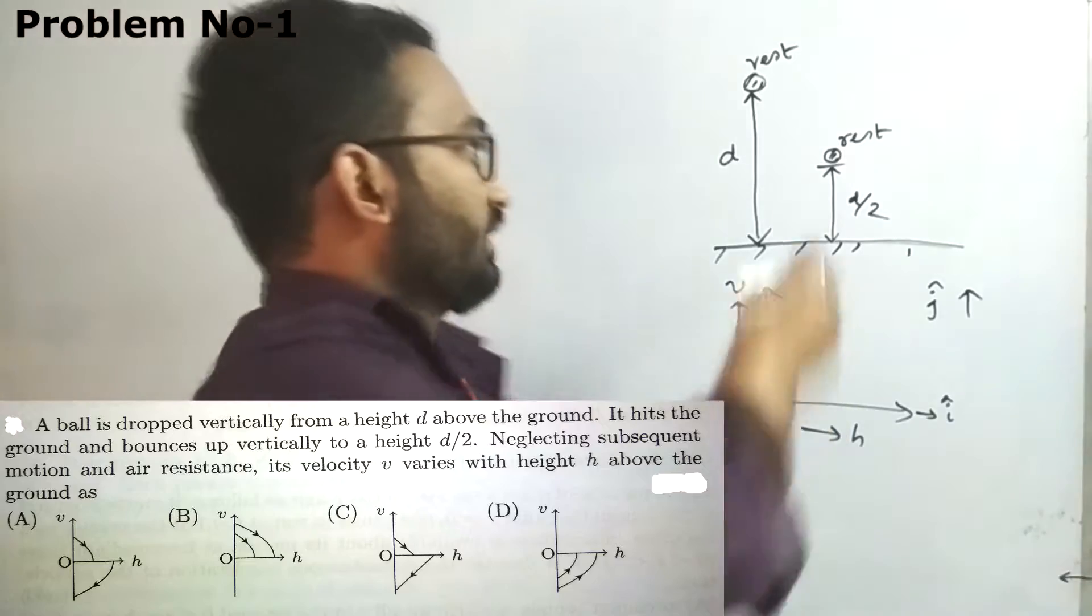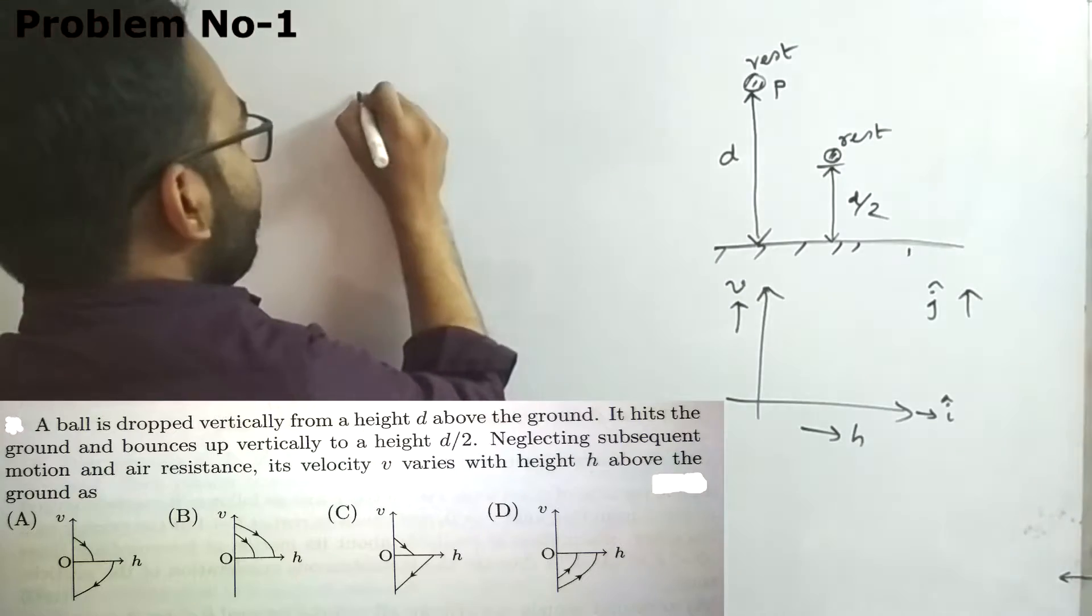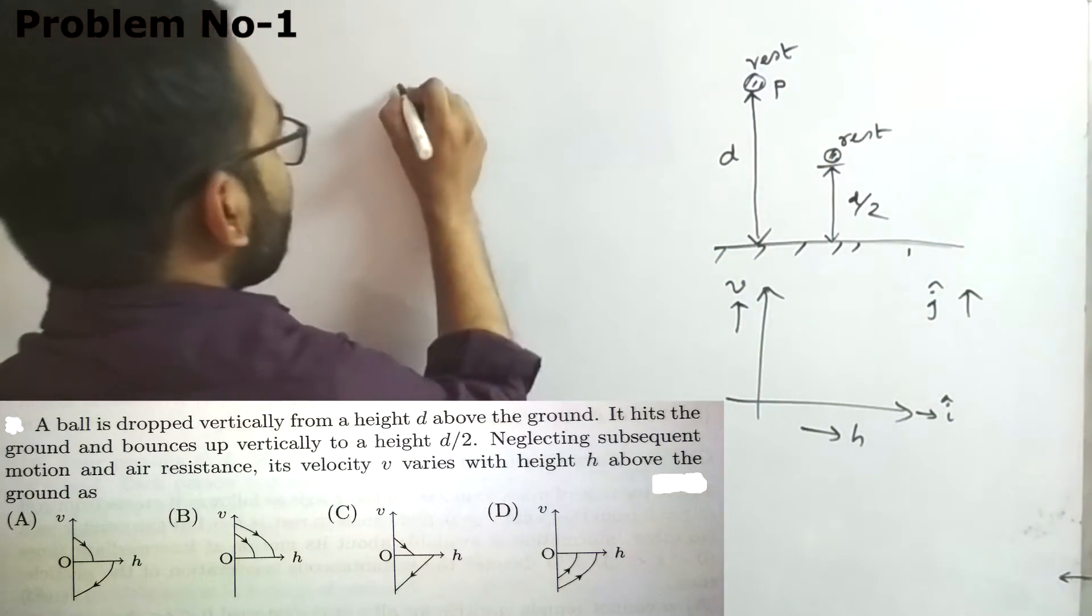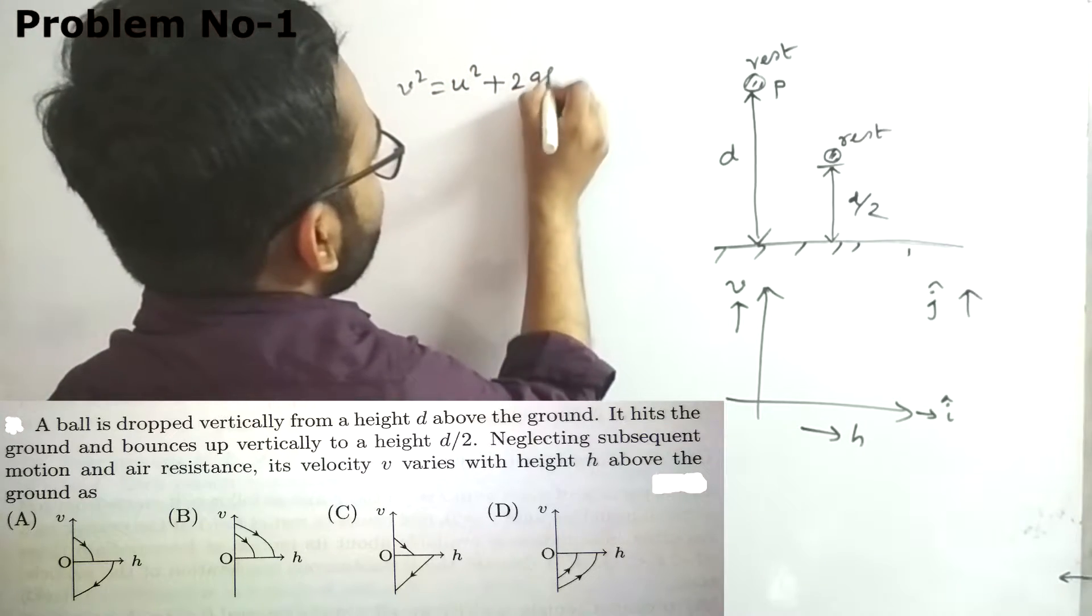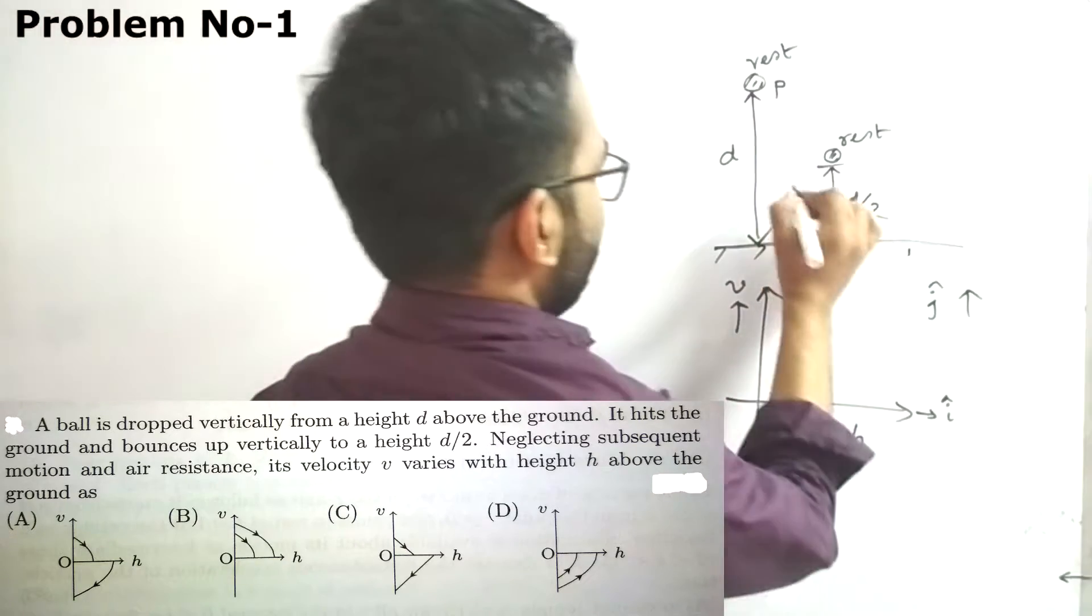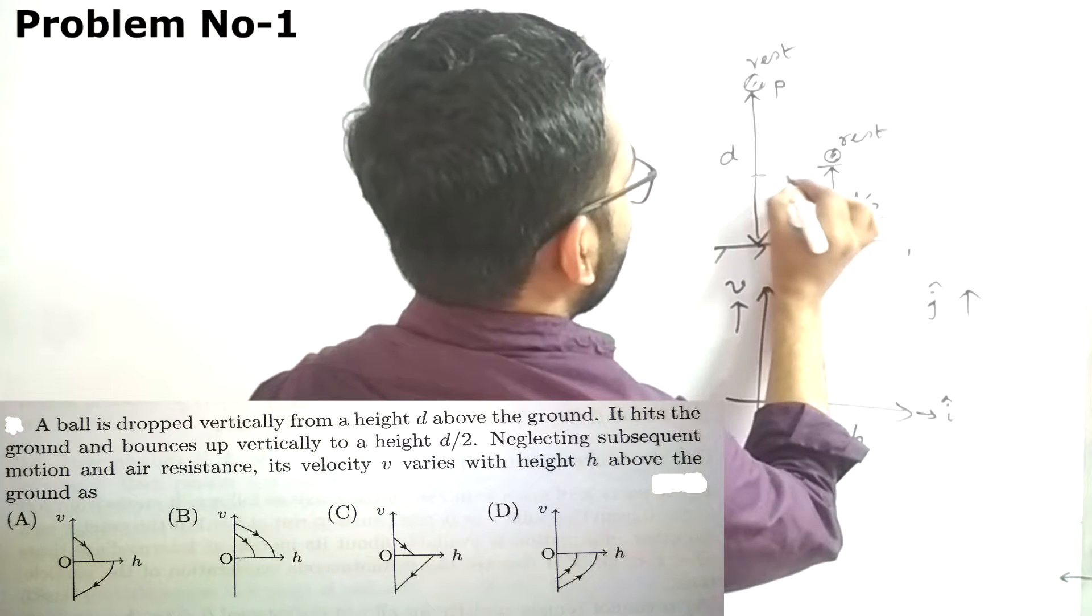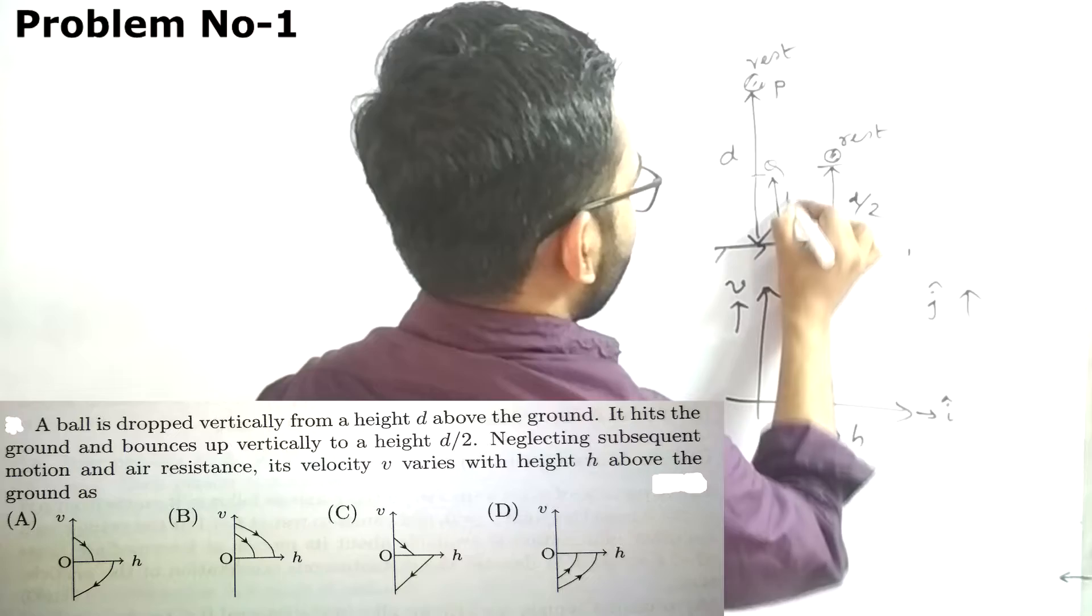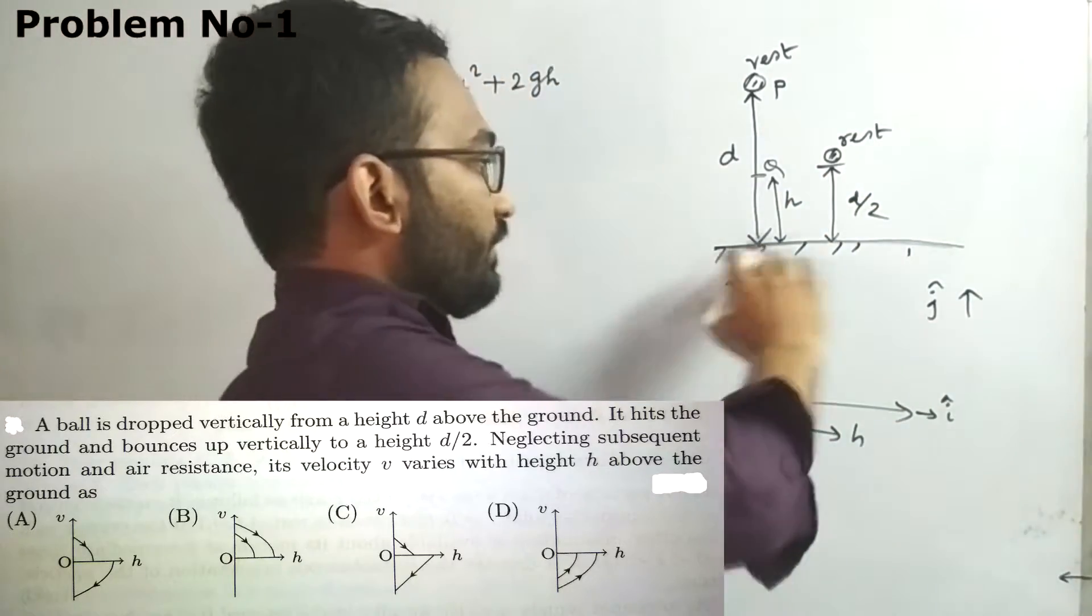The ball starts from point P. The equation governing the motion of this ball is v² = u² + 2gh. Now consider point Q which is at height h. We're considering the height from the ground.